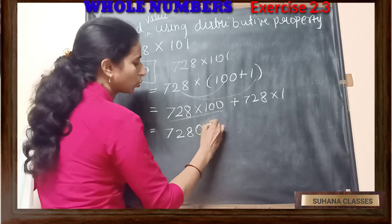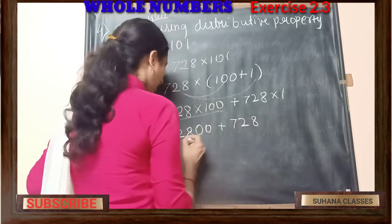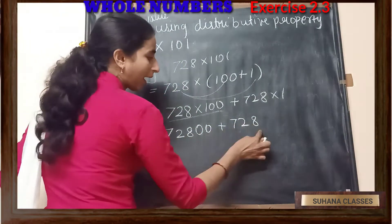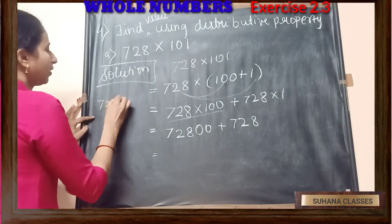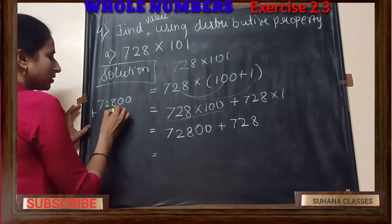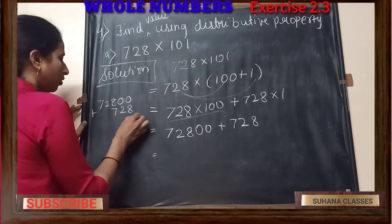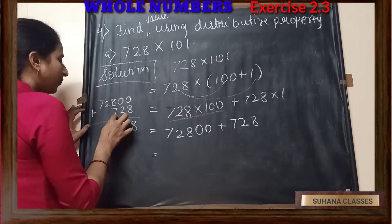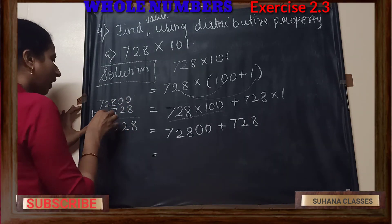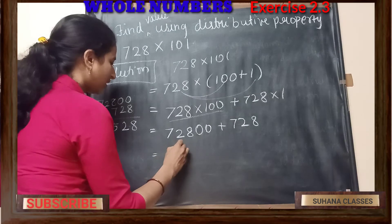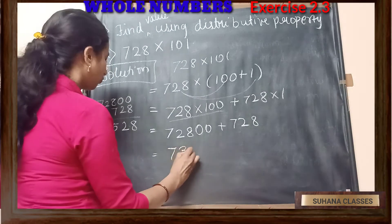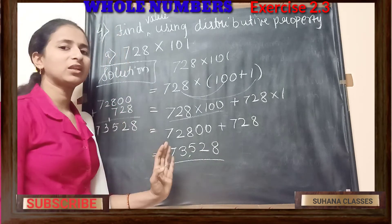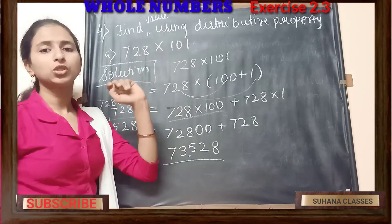If I multiply both numbers, it's very easy. 728 into 100 is just 72800, plus 728. And here we have to add these two numbers. If you don't know how to add like this, you can add it separately: 72800 plus 728. 0 plus 8 is 8, 0 plus 2 is 2, 8 plus 5 is 15 — 1 carry — then 3, then 7. Final answer is 73528. So this is our final answer, done using distributive property.